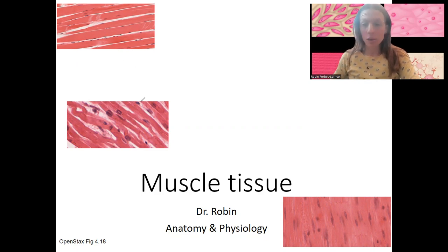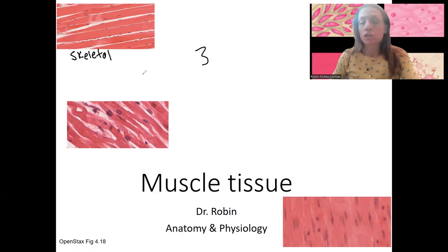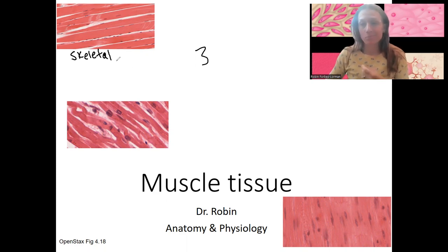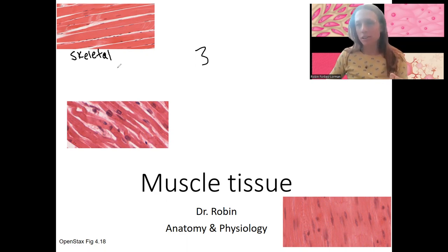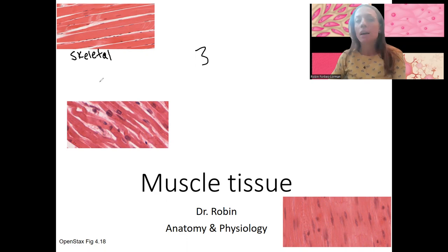Shown here are the three types of muscles — three categories. This up here is skeletal muscle. This is what attaches to your skeleton and allows your body to move — like running, walking, writing, talking, and breathing. It is mostly voluntary, meaning you're deciding to move that muscle, though there are exceptions.